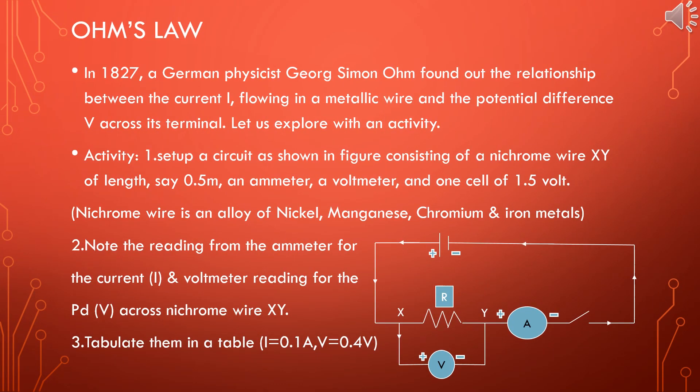Let us learn a new topic — that is Ohm's law. In 1827, a German physicist George Simon Ohm found out the relationship between the current I flowing in a metallic wire and the potential difference V across its terminals. Let us explore this knowledge with a simple activity.